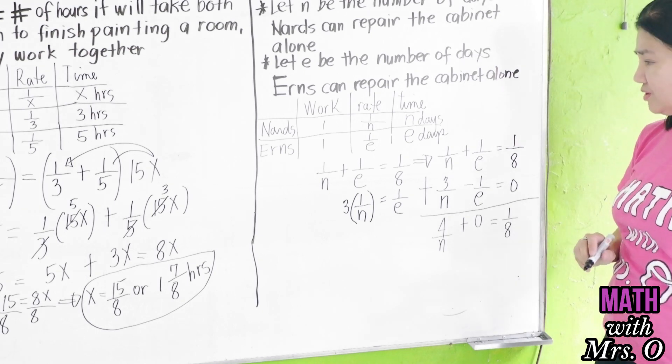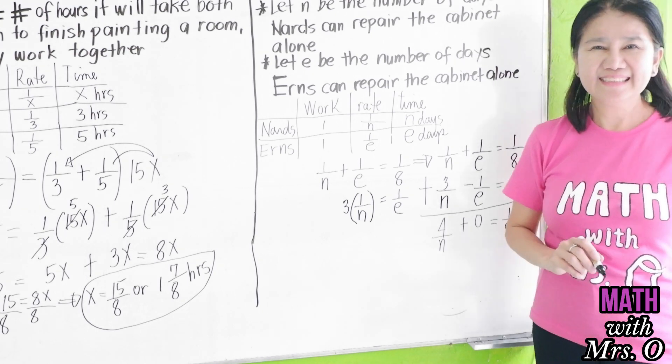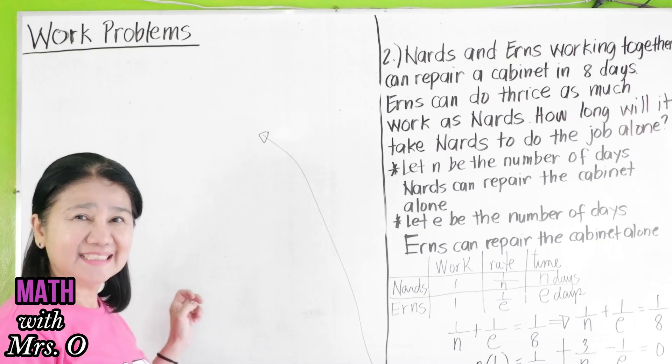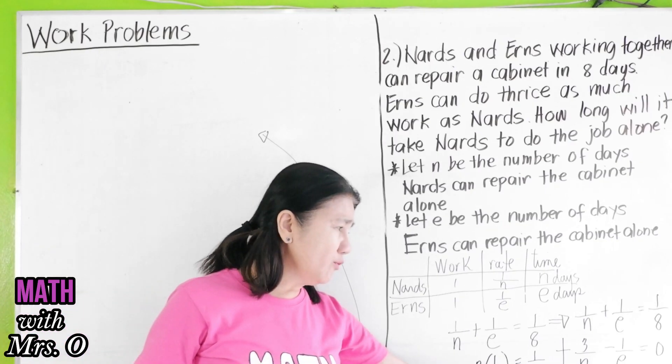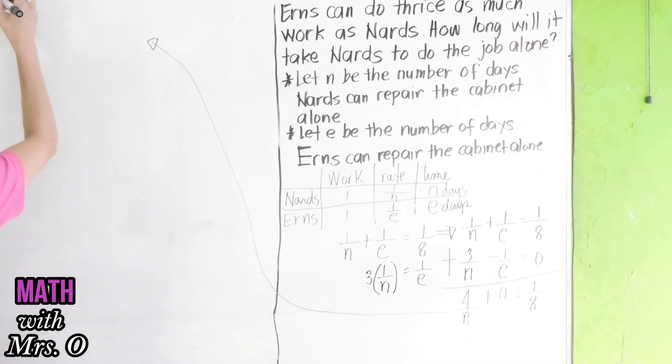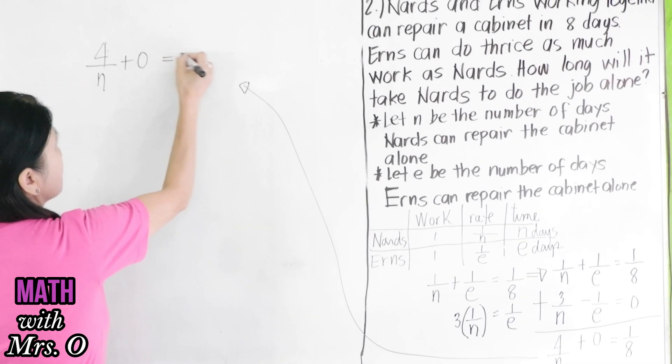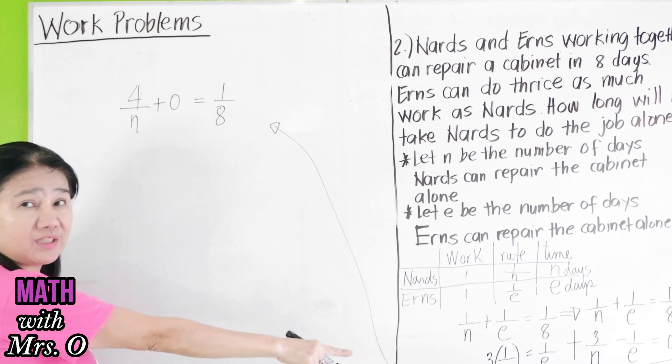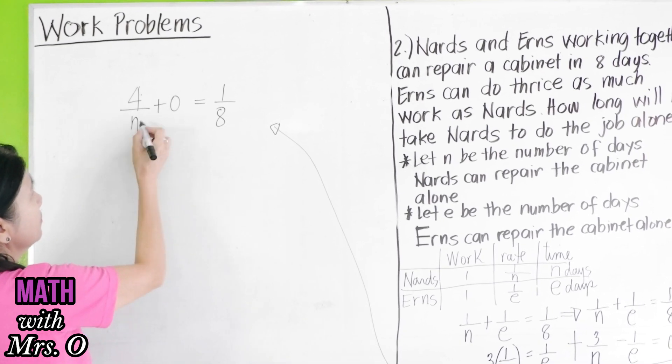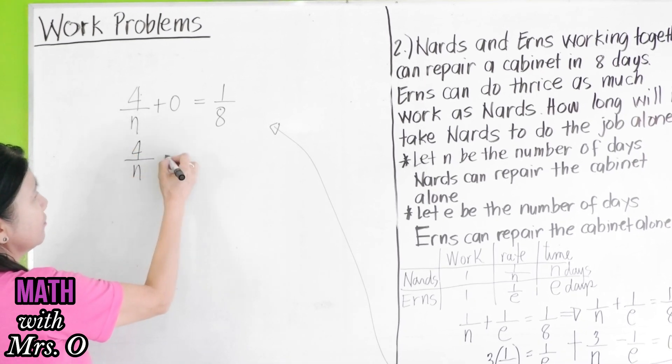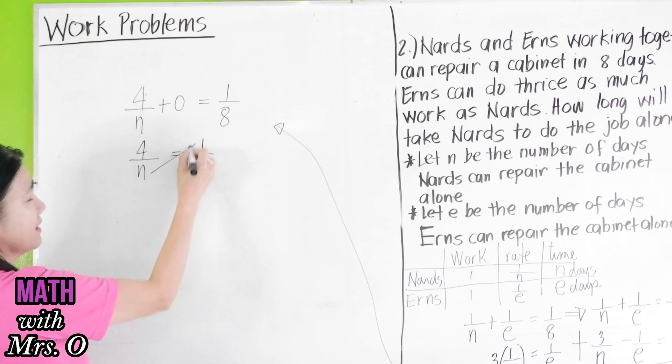So, we have here 4 over N plus 0 equals 1 over 8. 4 over N equals 1 over 8. Cross multiply, N times 1 is equal to N equals 4 times 8 is equal to 32.